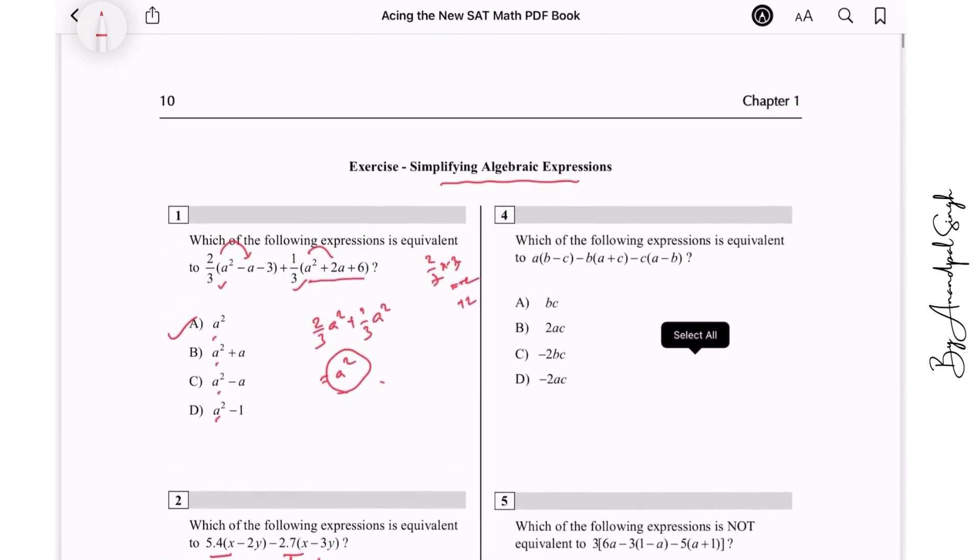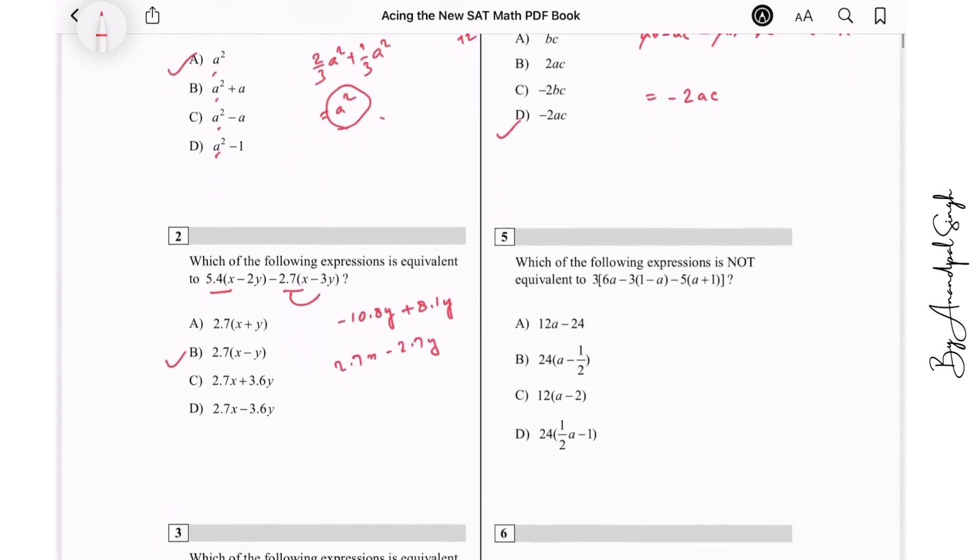Going to question number four. Which of the following expression is equivalent to this? a(ab - c) - b(a + c) - c(a - b). Let us expand it: ab - ac, then minus ab - bc, and then minus ac + bc. So bc - bc cancels out, ab - ab cancels out. We are left with negative of 2ac, this one.